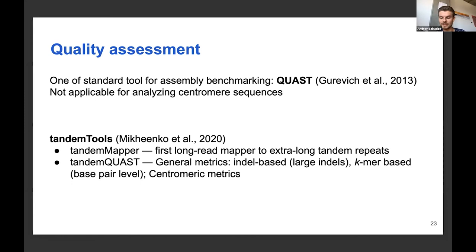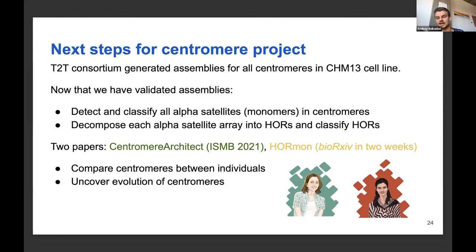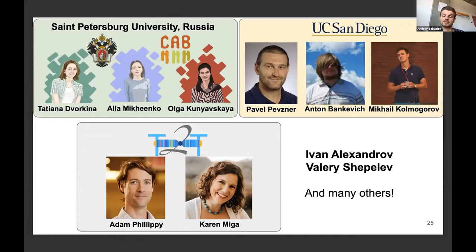The next steps for the centromere project were: once we had validated assemblies, to detect and classify all alpha-satellites and decompose each satellite array into HORs. We have two papers coming for that — one recently accepted to SMB describing the tool Centromere Architect, and another tool called HORmon which will be available on bioRxiv in a couple of weeks. After that, we will be able to compare centromeres between individuals, uncover their evolution, and find structural variants in centromeres associated with genetic diseases. I'd like to thank collaborators from Saint Petersburg University in Russia, UC San Diego, and the T2T consortium.